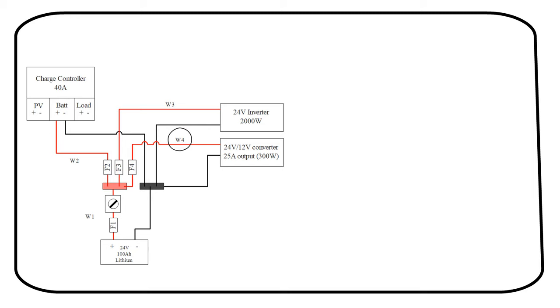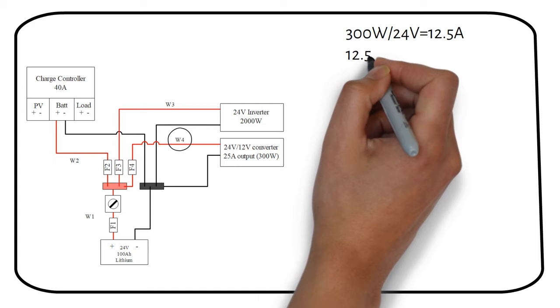For the last wire in our system, we divide the total power output of the DC to DC converter by the battery voltage. We become 12.5 amps. We then multiply by the safety factor to become 16 amps.